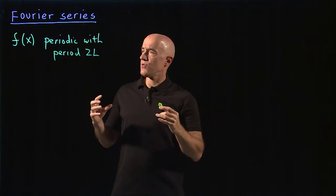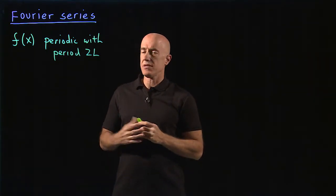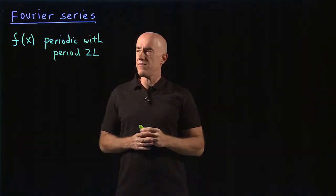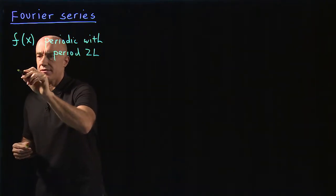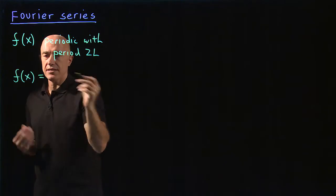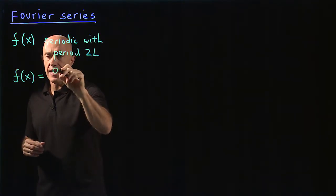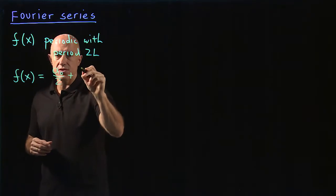How do you represent f of x as a Fourier series? There's a rather fixed expression for that. We write f of x equals a constant term, which we write as a naught divided by 2, plus a series.